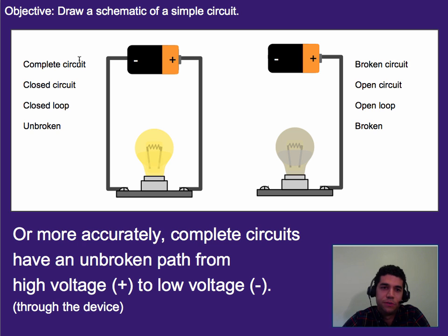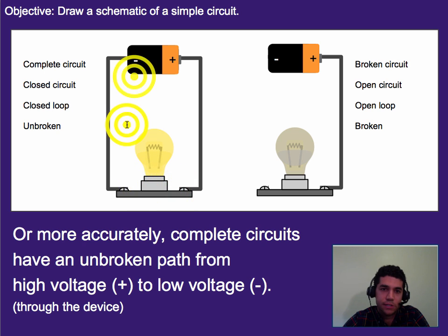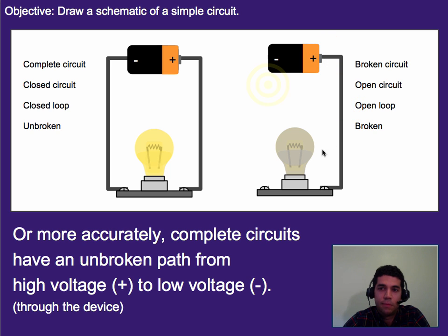I've used a few different terms, so I'm going to be more explicit about it. A complete circuit is the same thing as a closed circuit because it's a closed loop all the way around — we often call it a closed loop — and it's unbroken. All of those terms can be used to describe a circuit that is working, versus a circuit where the light bulb isn't lighting would be one where the circuit is broken or open, because there's a side that is open. It's an open loop, or just plain broken.